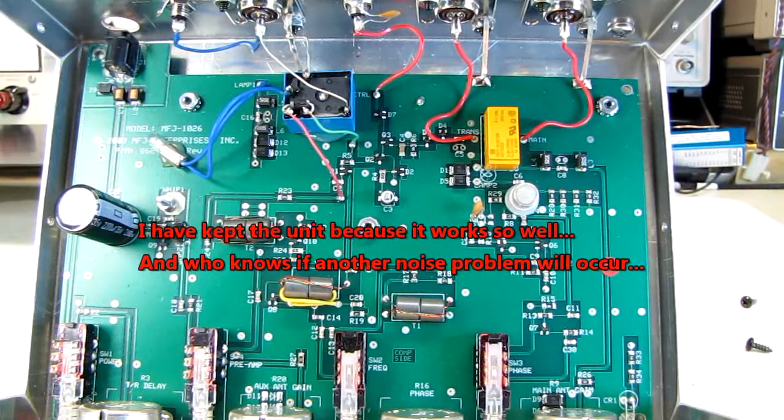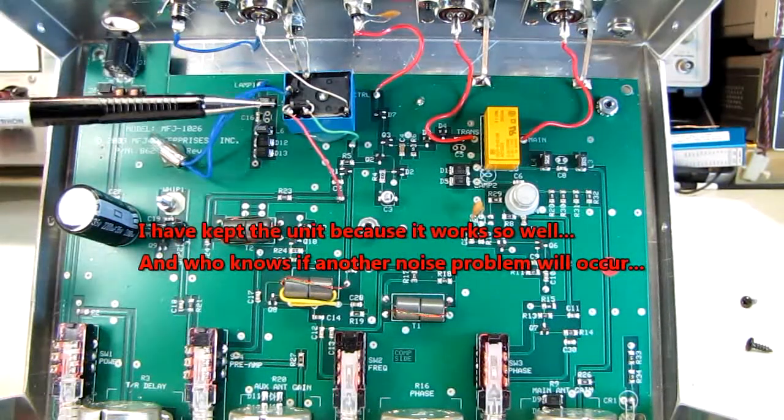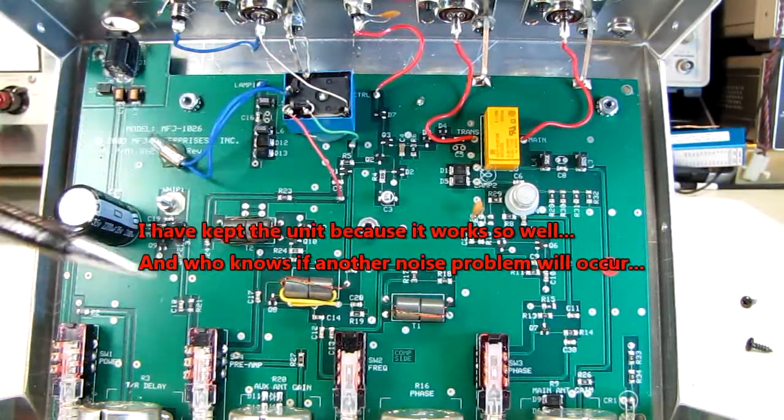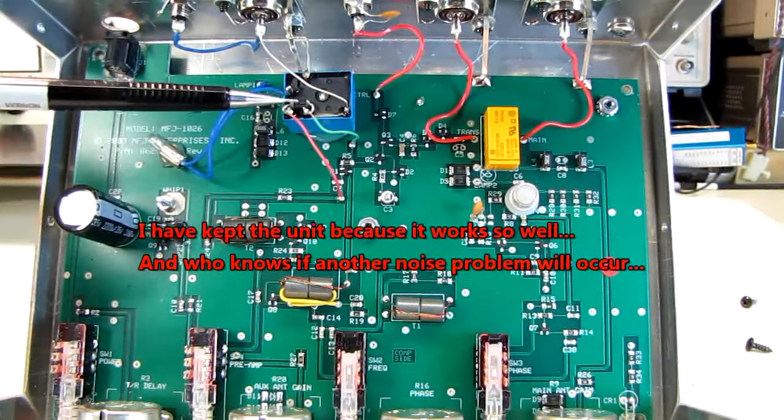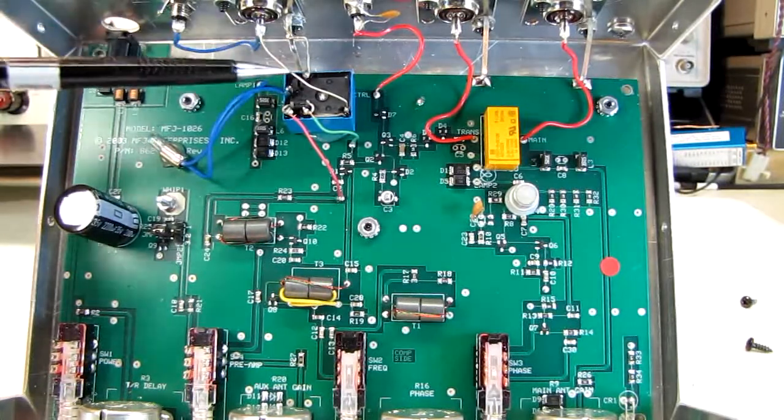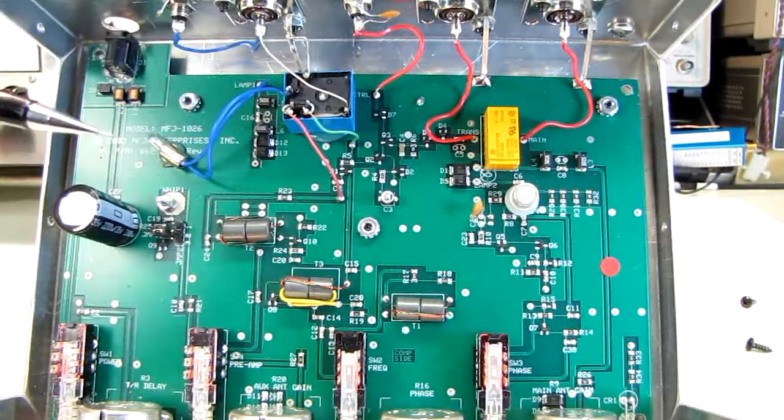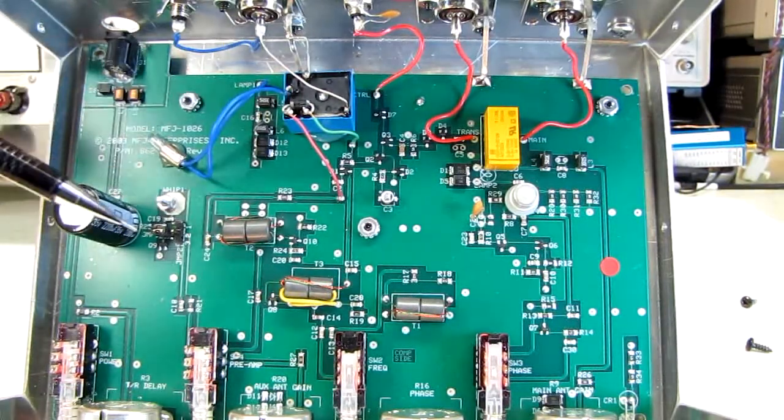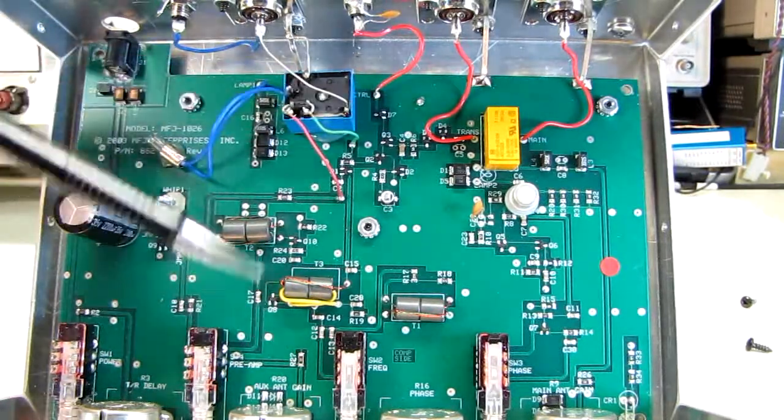So I guess that about wraps it up. Find yourself a relay with a coil rating of under 100 milliamps should be fine. Heavy-duty contacts, because anything that comes up this line is going directly to ground. You don't want the contacts to burn up, especially if you're running more than 1,000 watts.